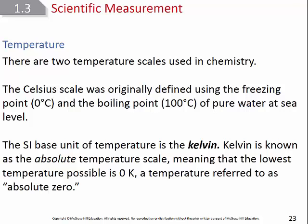Degrees Celsius is what we see the most often in chemistry, but it's not the base SI unit for temperature because it has a problem: Celsius can be positive or negative. Negative 20 degrees Celsius and positive 20 degrees Celsius are obviously very different temperatures, but if we're doing a calculation multiplying by temperature, in both cases we would multiply by a factor of 20, and that can be problematic.